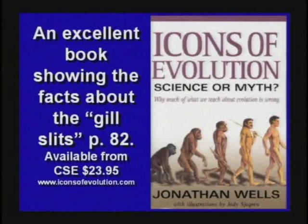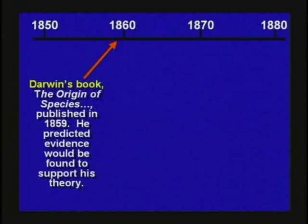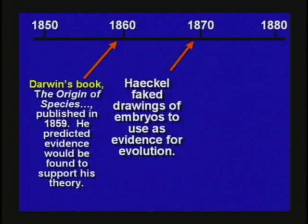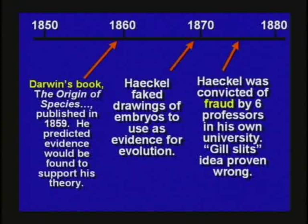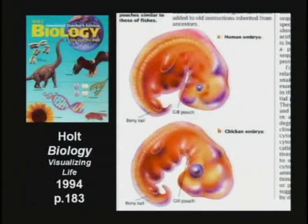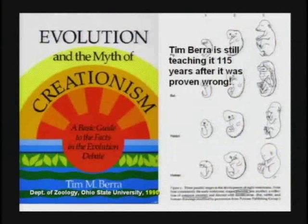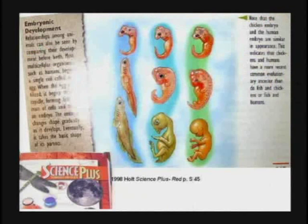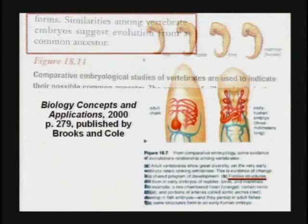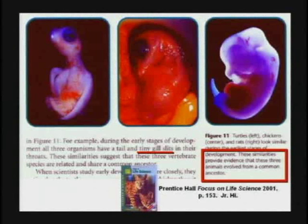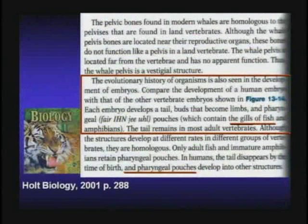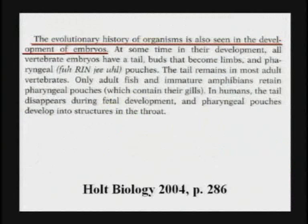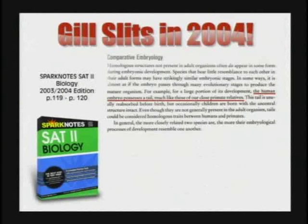More about the gill slits in the book Icons of Evolution. Darwin's book came out 1859, he predicted they would find evidence. 1869, Haeckel faked the drawings. 1875, it was proven wrong. But it's still in textbooks used all over the planet. A 2004 textbook still has it. A 2005 textbook used in Chickasha, Oklahoma is still teaching the baby has gill pouches — gill slits on the embryo. They're teaching this in textbooks all over the world, and it's only been proven wrong since 1875. Get it out of the book. Tear the page out. It's a no-brainer. It's not true.